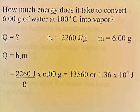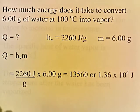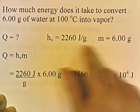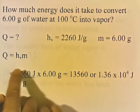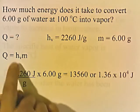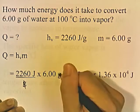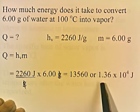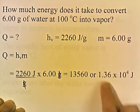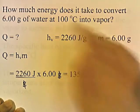How much energy does it take to convert 6 grams of water at 100 degrees into vapor? This is a change of state, not a temperature change. H sub V is 2,260 and mass is 6. Q equals H_V times M: 2,260 times 6. Grams cancel, and 2,260 times 6 gives 13,560, or 1.36 times 10 to the 4th joules. That's how much energy it takes to vaporize 6 grams of water at 100 degrees Celsius.